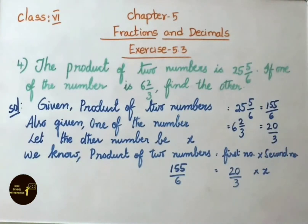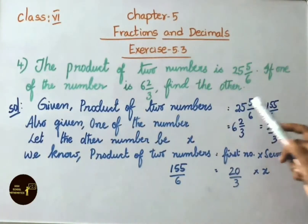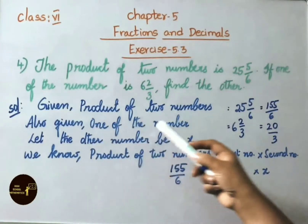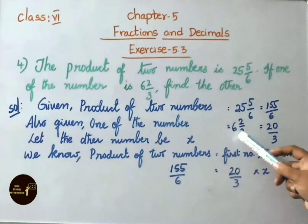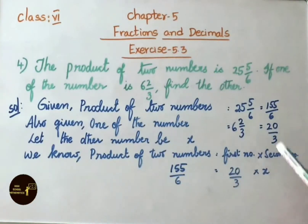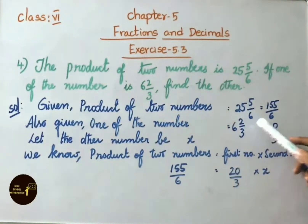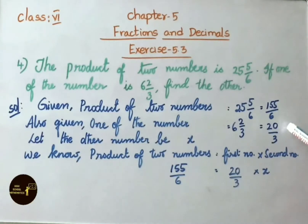Let us convert this mixed fraction to improper. 6 times 25 is 150 plus 5, that is 155/6. Also given one of the numbers is 6 2/3. Let us convert this mixed fraction also to improper fraction. 3 times 6 is 18 plus 2, that is 20. So 20/3.